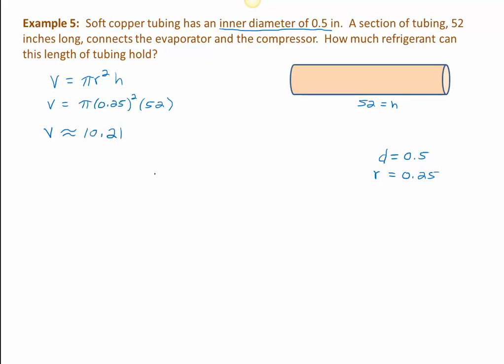So here we have the volume is about 10.21, 10.21 what? Well, this radius was in inches. When we squared the radius, we got square inches. The length, or the height, was 52 inches. So I have inches times inches times inches, which gives us cubic inches.